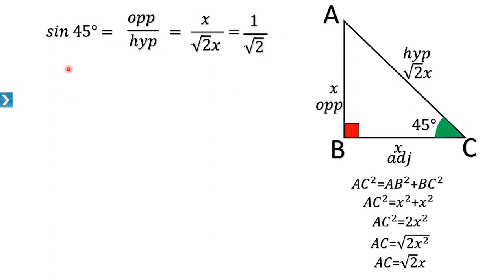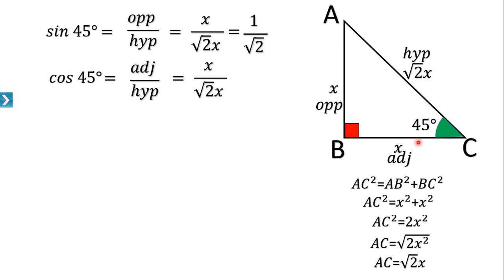The next trigonometric ratio is cos 45°. The formula is adjacent / hypotenuse. The adjacent side is x and the hypotenuse is √2x. So cos 45° = x / √2x. The x's cancel, giving 1/√2. Therefore cos 45° = 1/√2.